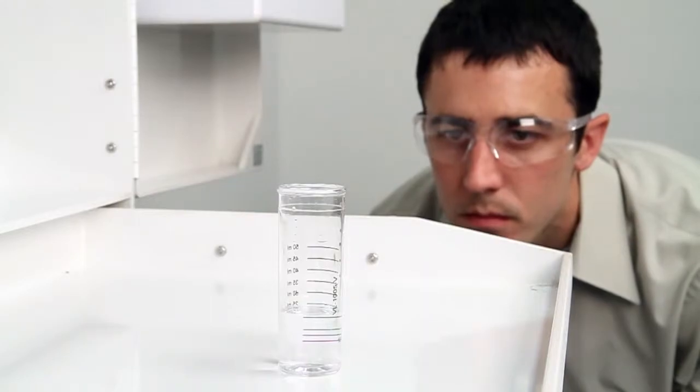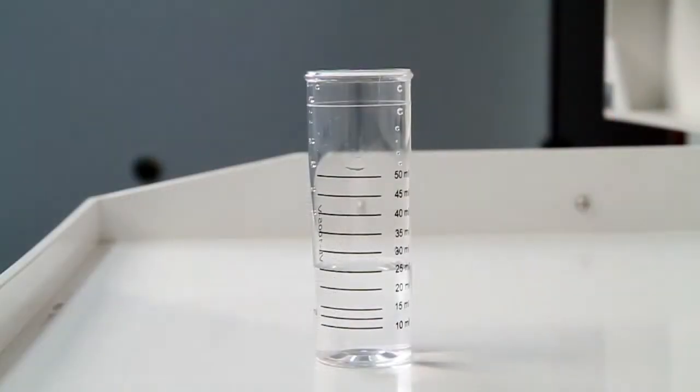When performing a drop count titration, a white background can provide contrast to better see the color changes. A cabinet tray or a white paper towel can provide that contrast.